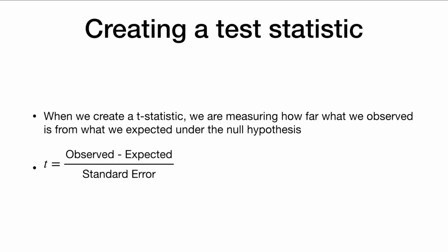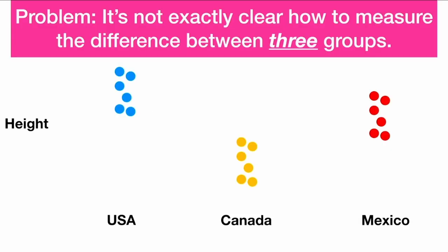When we do a hypothesis test, we want to create a test statistic that measures how weird our data is under the null hypothesis. So when we do a t-test, we create a t-statistic, which measures how far our observed data is from the expected data. When we have more than two groups, though, it's not exactly clear how to measure the difference between three or more groups.